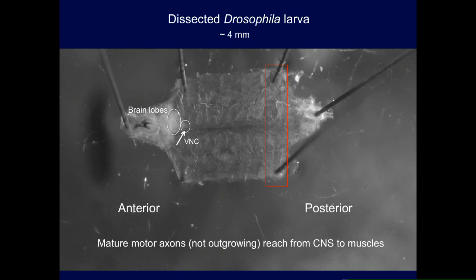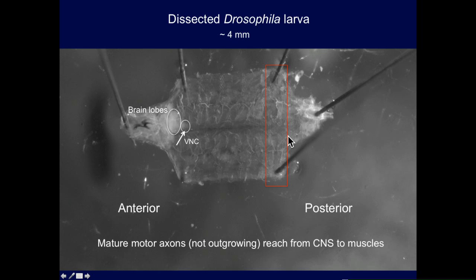The prep we use for most of our work is the dissected Drosophila third instar larvae, where you see at the anterior side the brain lobes and the ventral nerve cord, with short motor axons going out to the anterior body wall segments and longer ones going out to the posterior ones. Not quite the same scale of problem as human axons, but still similar in principle.